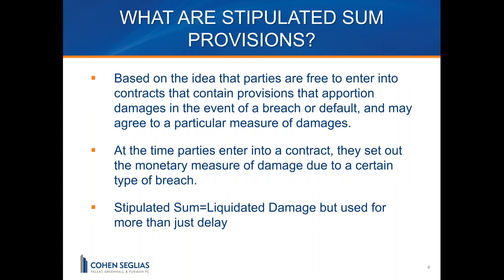So to begin, what are stipulated sum provisions? I'm going to use 'stipulated sum' interchangeably with 'liquidated damages.' In the construction industry, everybody thinks of liquidated damages as only something that happens if a project finishes late, but it can be more general. The idea is that the parties are free to enter into contracts that contain provisions apportioning damages in the event of a breach or default, and they may agree to a particular measure of damage. At the time the parties enter a contract, they essentially agree on what the monetary measure of that damage is — if this event occurs, the damage will be measured as X.